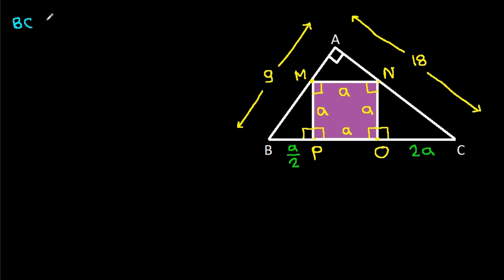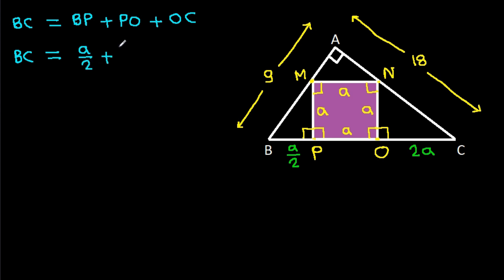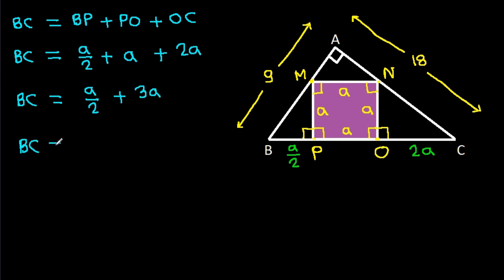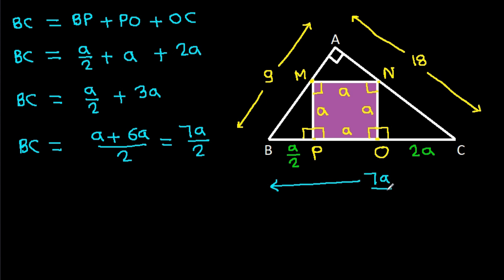Now BC is equal to BP plus PO plus OC. BC equals BP plus PO plus OC, which is A over 2 plus A plus 2A. That gives A over 2 plus 3A, which is A plus 6A over 2, that is 7A over 2. So BC is 7A over 2.